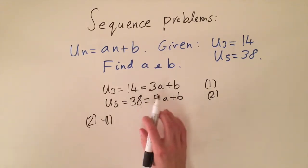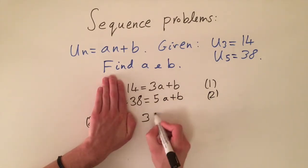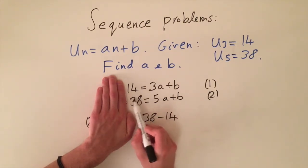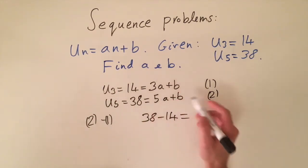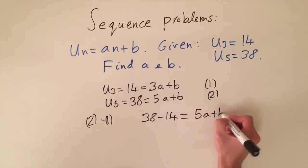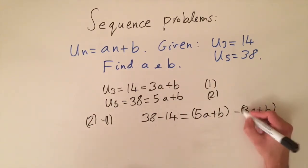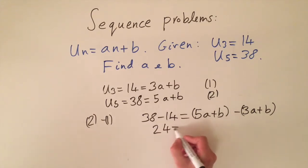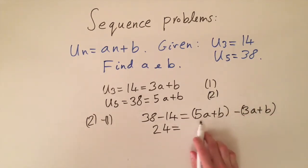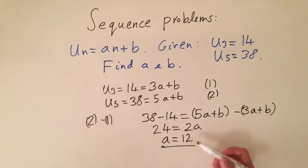Computing equation 2 minus equation 1: on the left-hand side, 38 - 14 = 24. On the right-hand side, (5a + b) - (3a + b) = 2a, since the b terms cancel. So 24 = 2a, giving a = 12. We're halfway there.